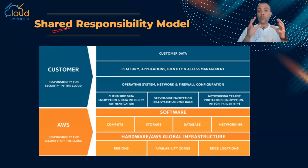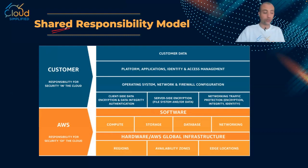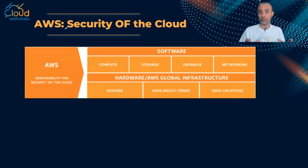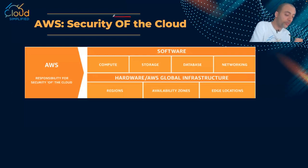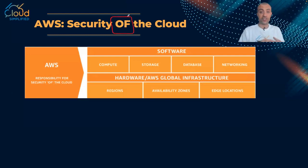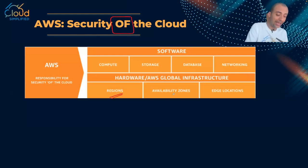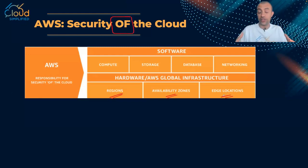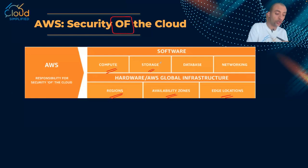There are some parts that are the complete responsibility of AWS and some other parts the complete responsibility of customers. Let's start with the AWS part. AWS is responsible for the security of the cloud - specifically the physical security of the regions, the availability zones, and the edge locations. The physical entry and access to these data centers is controlled so no one can cause any harm to the physical servers, storage, or networking.